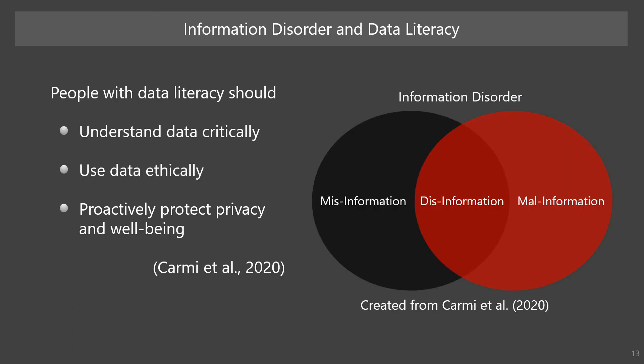Today, we are in a society filled with three types of information disorder: misinformation, disinformation, and malinformation. Misinformation is when false information is shared but no harm is meant. Disinformation is when false information is knowingly shared to cause harm. Malinformation is when genuine information is shared to cause harm. Therefore, as a person with data literacy, we need to understand data critically and collect and use data in an ethical way. Moreover, in the process of data science workflow, we should proactively protect individual and collective privacy and well-being.